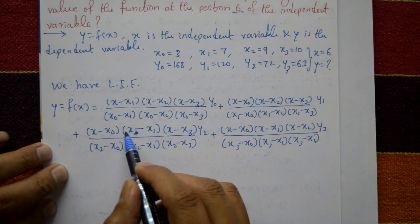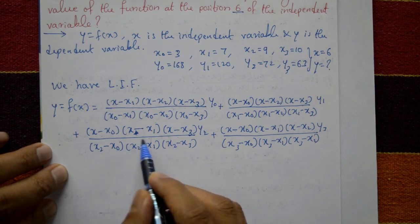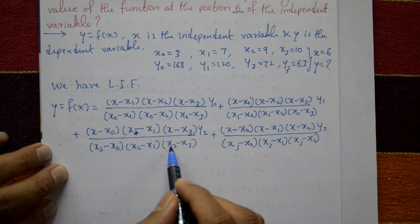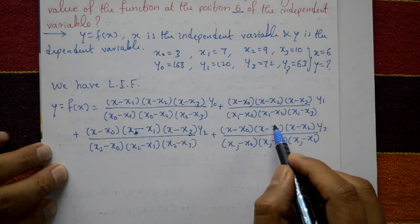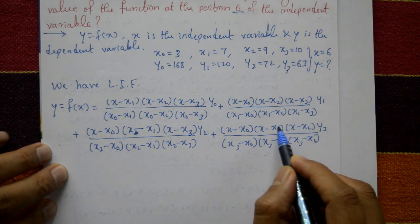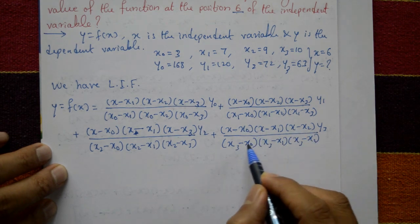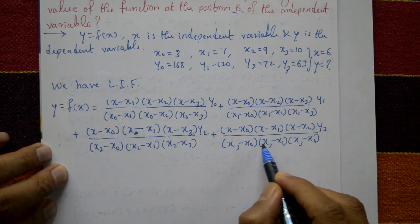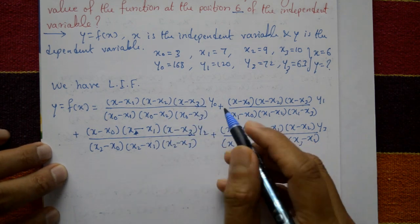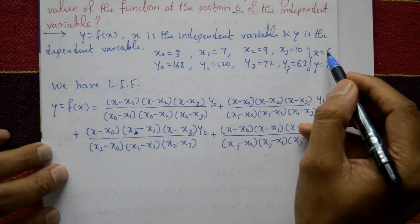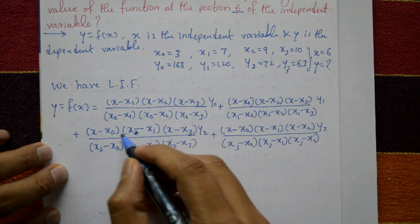Similarly, third term is excluding x2 in numerator and including x2 in denominator. Plus the fourth term is excluding x3 in the numerator but including x3 in the denominator. Now directly substitute x and y values into this formula.